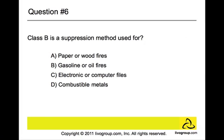Question number six: Class B is a suppression method used for? The answer is B — they are used for gasoline or oil fires. CO2, soda acid, and halon should be used to fight these types of fires.